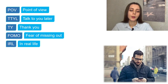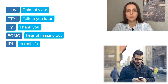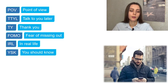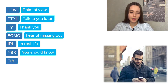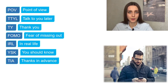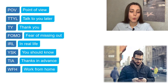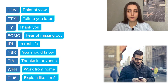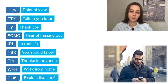IRL means 'in real life' — 'I want to see you IRL' means not online, but in reality. YSK means 'you should know.' TIA means 'thanks in advance.' WFH means 'work from home.' ELI5 means 'explain like I'm five' — if you don't understand something, you can say 'please explain like I'm five,' ELI5.